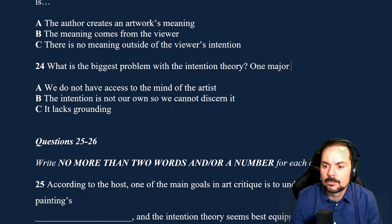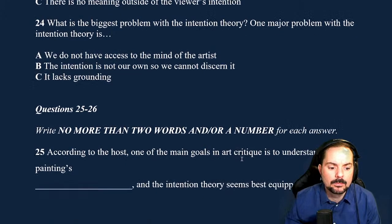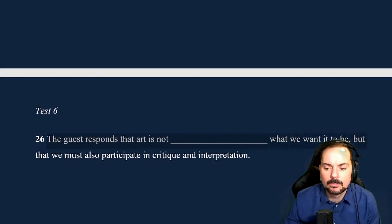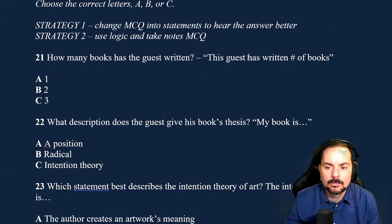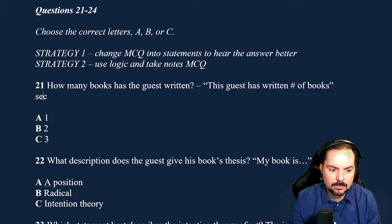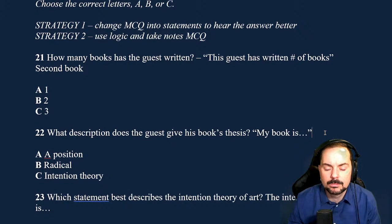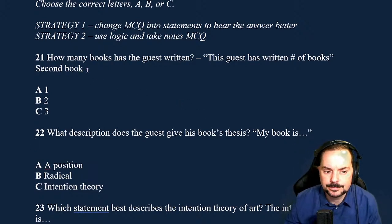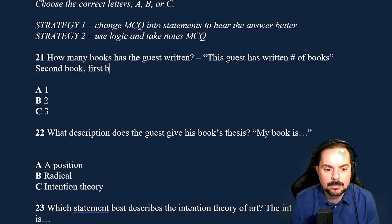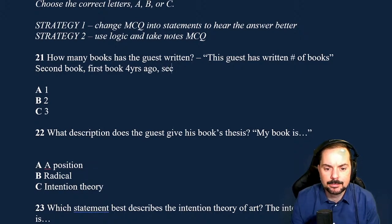Now turn to section three. Take some time to look at questions 21 to 26. Listening section three: you will hear a radio host and his guest discussing the virtues of various art forms. Now listen carefully and answer questions 21 to 26. Welcome back — our next guest is the curator of a major art gallery in the city who has just released his second book on the virtues of art. We're pleased to have Mr. Edgar Patterson here today.